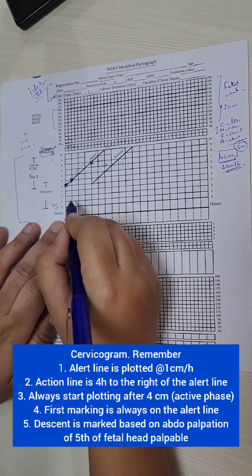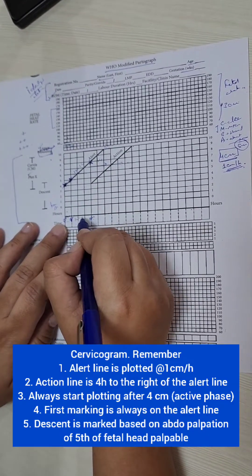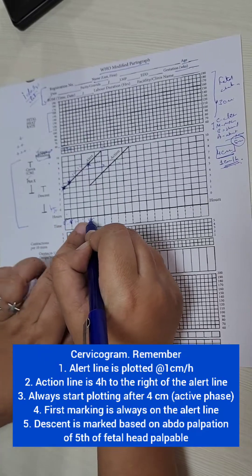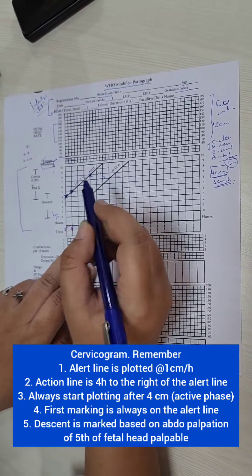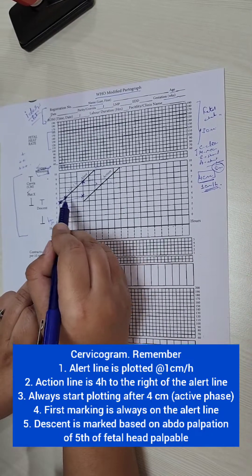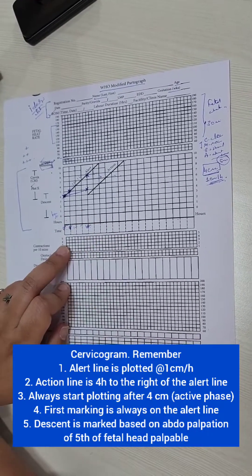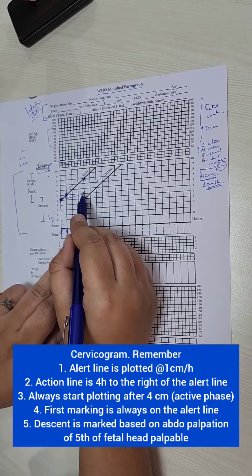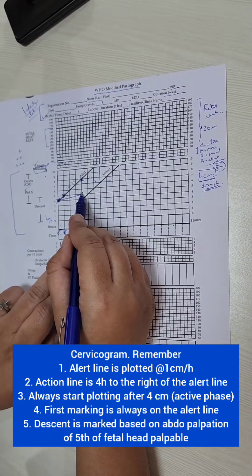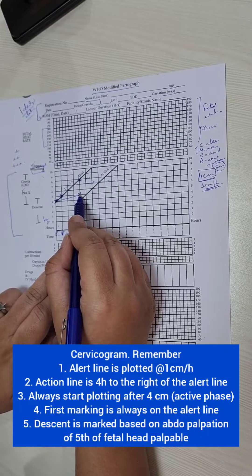So say she was at 8 a.m. 4 centimeters and this is 9, 10, 11, 12. At 12 when I see her, she is say 5 centimeters. So then I plot the next line here and then I join the two. So this is now her curve, her graph. So it has crossed the alert line and I need to know why it has crossed the alert line and take corrective measures.